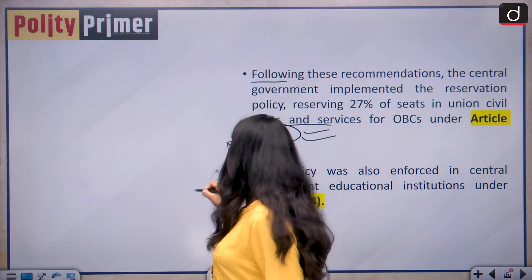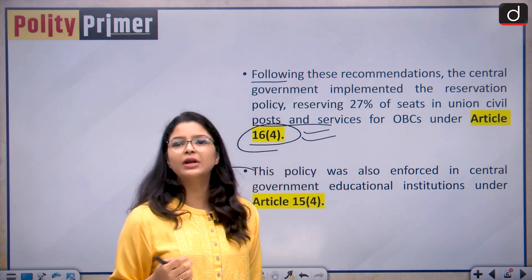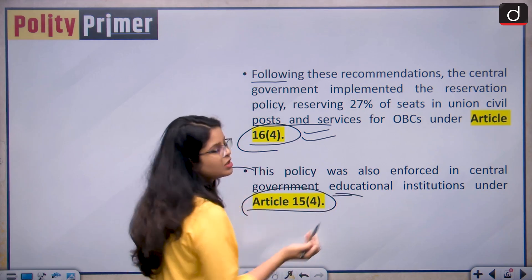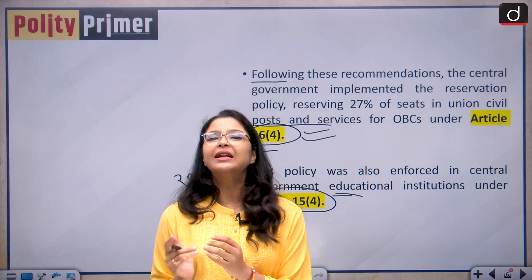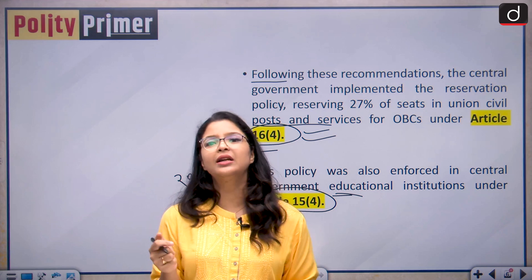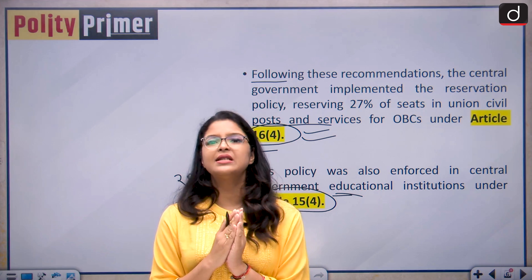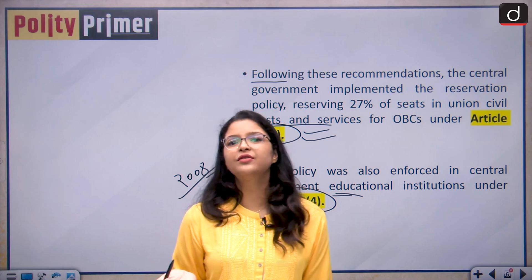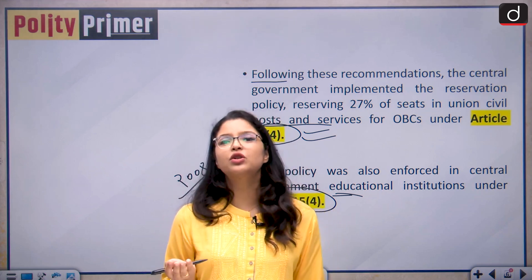In 2008, the 27% reservation was also extended to educational institutes run by the central government under Article 15(4) of the Indian Constitution. This reservation is a positive discrimination done to uplift the marginalised communities who have been historically wronged. OBCs are currently entitled to 27% reservation in central government jobs as well as in educational institutions.